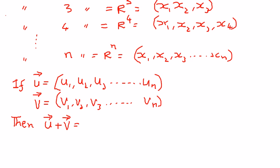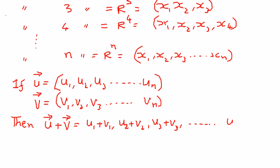then we can add these two vectors, vector u plus vector v. We can write this as: u1 plus v1, u2 plus v2, u3 plus v3, and so on, all the way to un plus vn. So that is the way we define Rn spaces. In my next presentation, we should look at examples using Rn spaces.